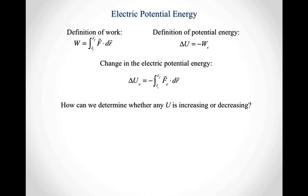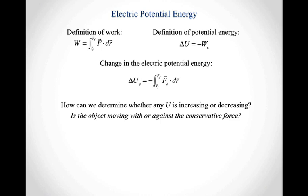How can we take this to think about how any potential energy increases or decreases? The key is to reframe the question in terms of: is the object moving with or against the conservative force? If the object moves with the conservative force, then the potential energy will decrease. If the object moves against the conservative force, then its potential energy increases.